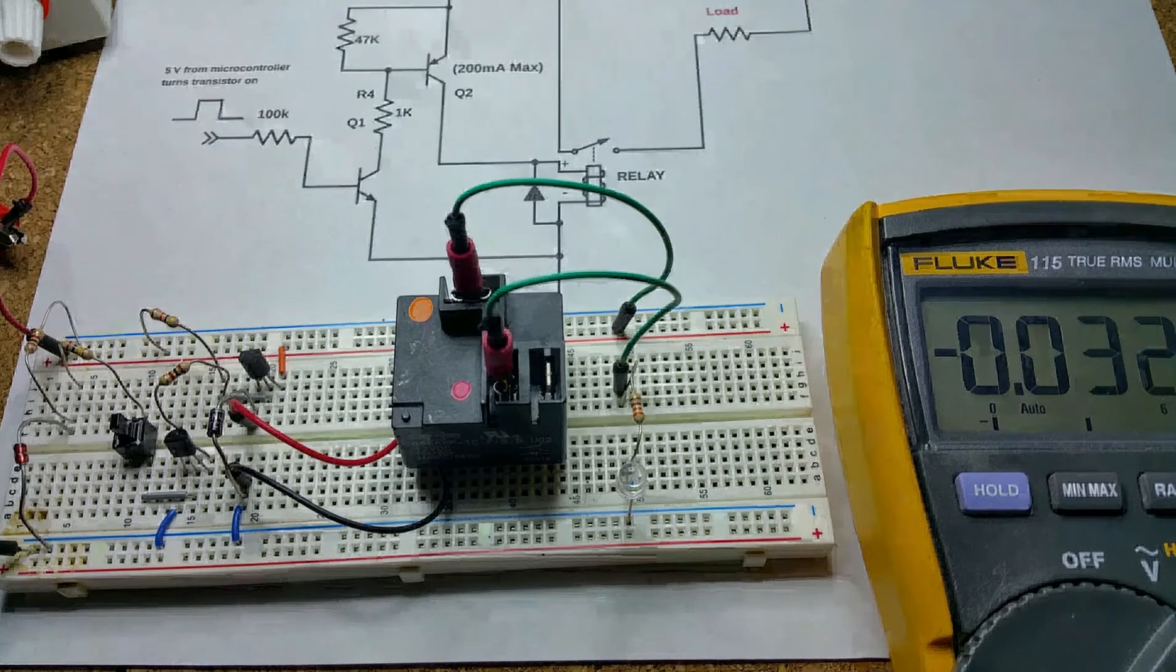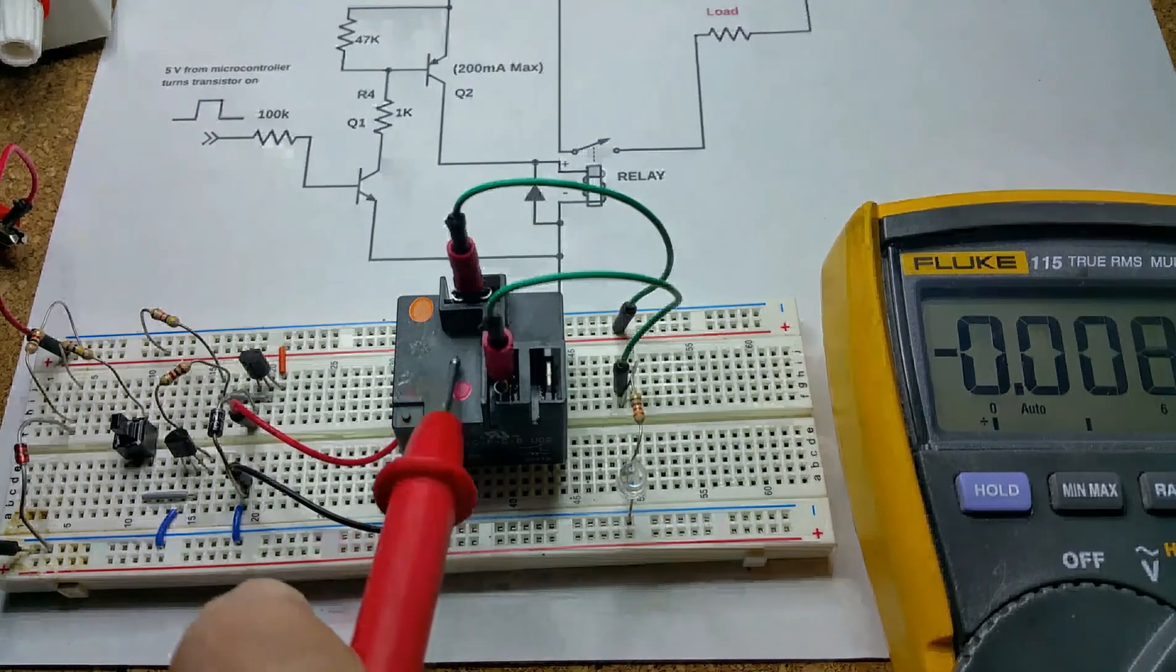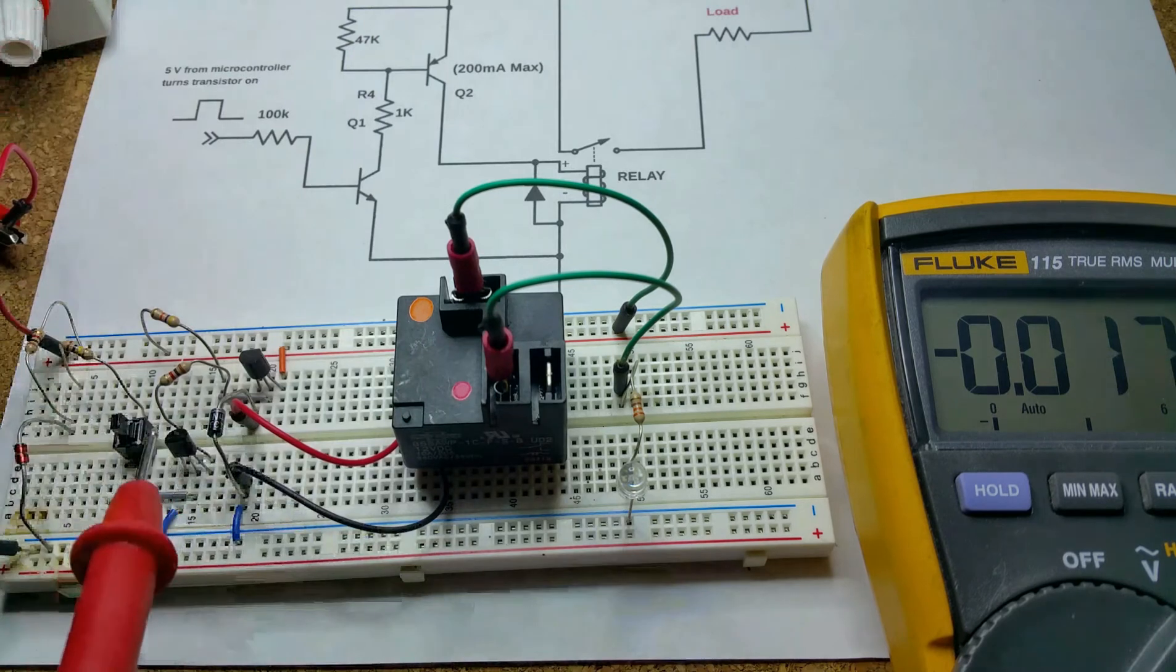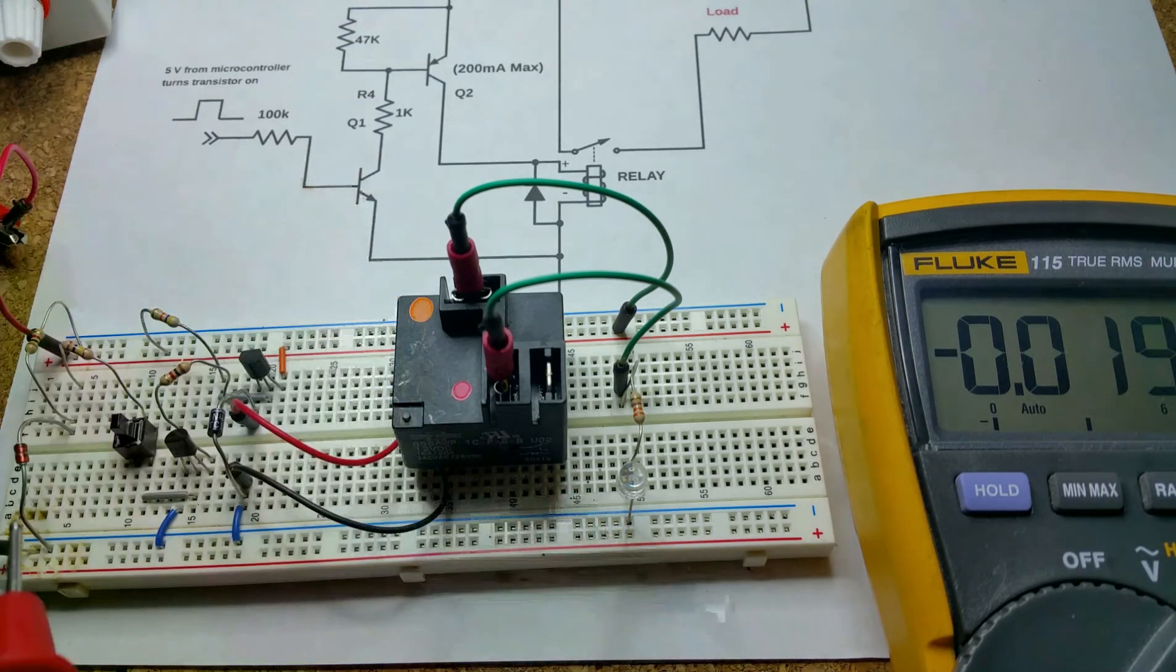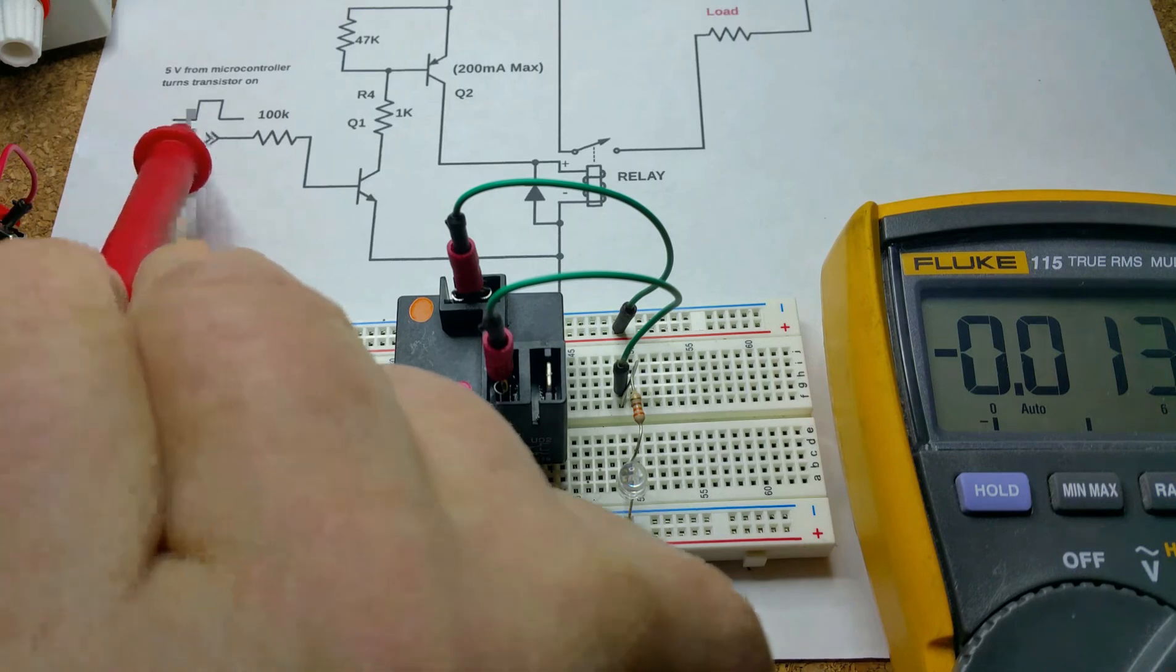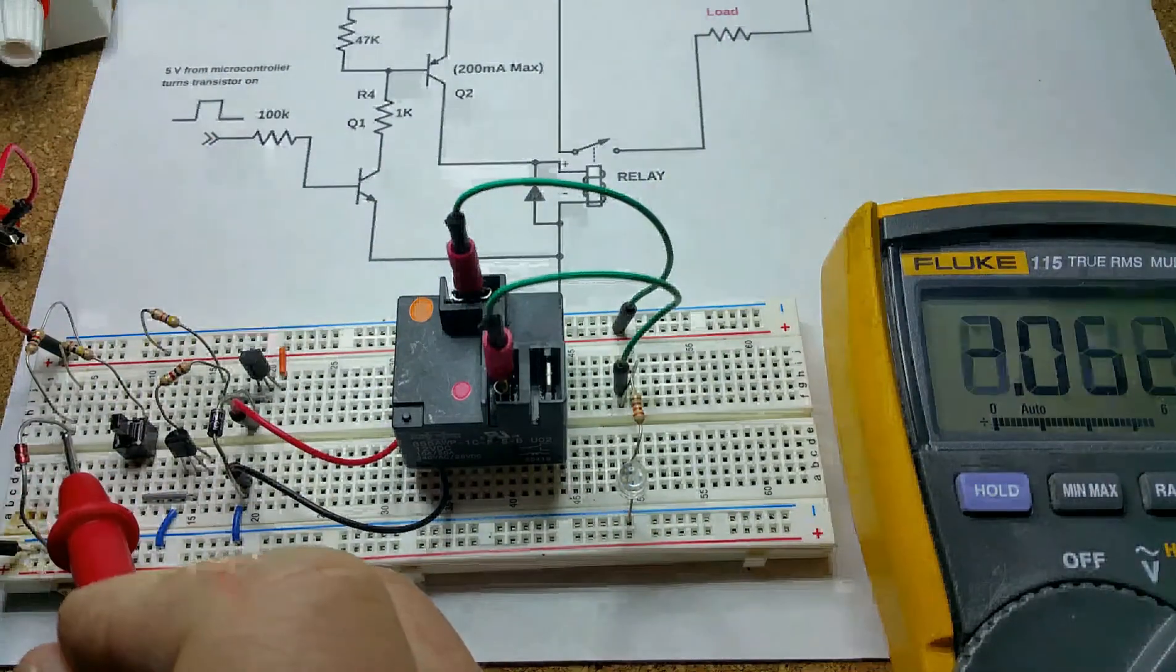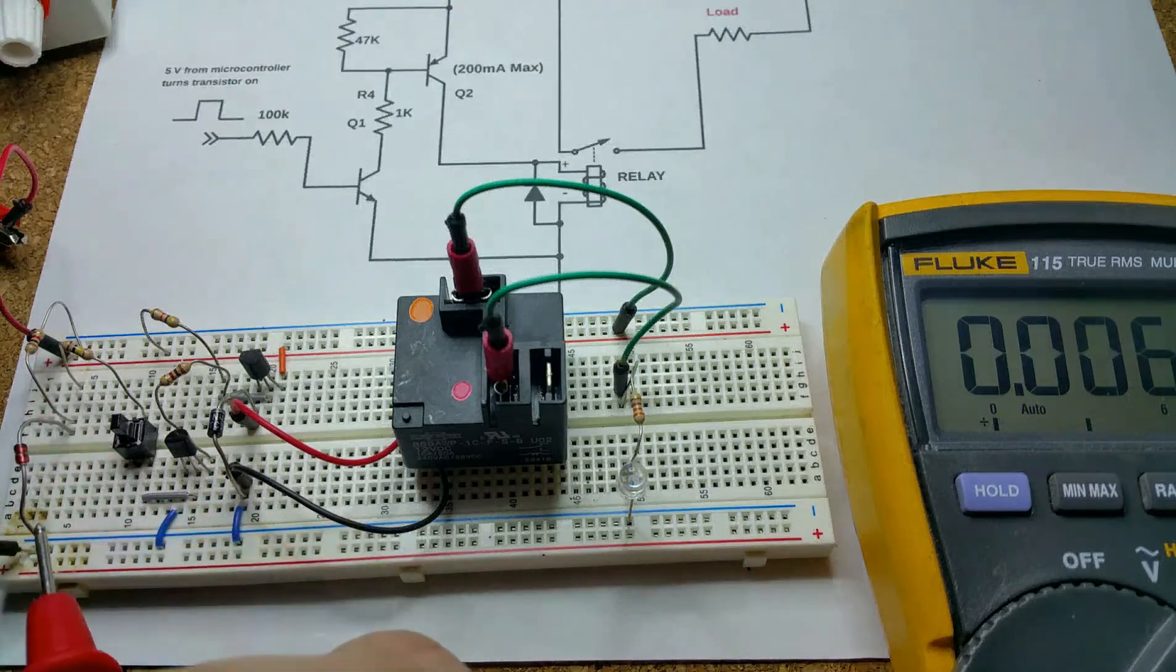So here's a protoboard mockup for that circuit where you have your relay, your main driver transistor which is that one, your pre-driver, this guy here, and then the microcontroller pulse. We're going to simulate a 5 volt pulse using a 5 volt Zener diode and a resistor to create a voltage reference.